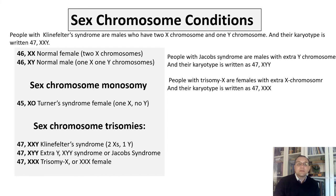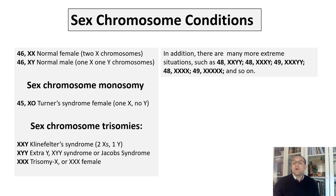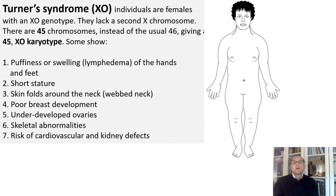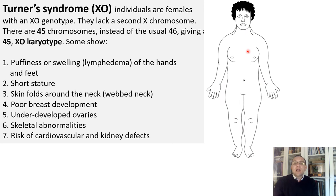There are also more extreme situations such as 48,XXYY; 48,XXXY; 49,XXXXY; 49,XXXX; and so on. People with Turner's syndrome are females who have puffiness or swelling known as lymphedema of the hands and feet, short stature, skin folds around the neck, a webbed neck, poor breast development, underdeveloped ovaries, skeletal abnormalities, and risk of cardiovascular and kidney disease.